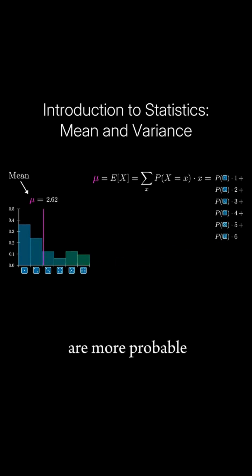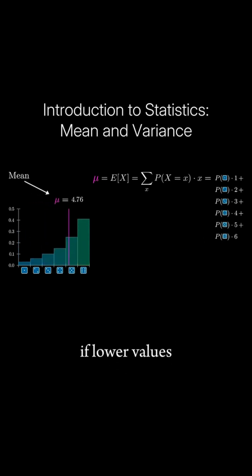If higher values are more probable, that weighted sum is going to be bigger. If lower values are more probable, that weighted sum is going to be smaller.